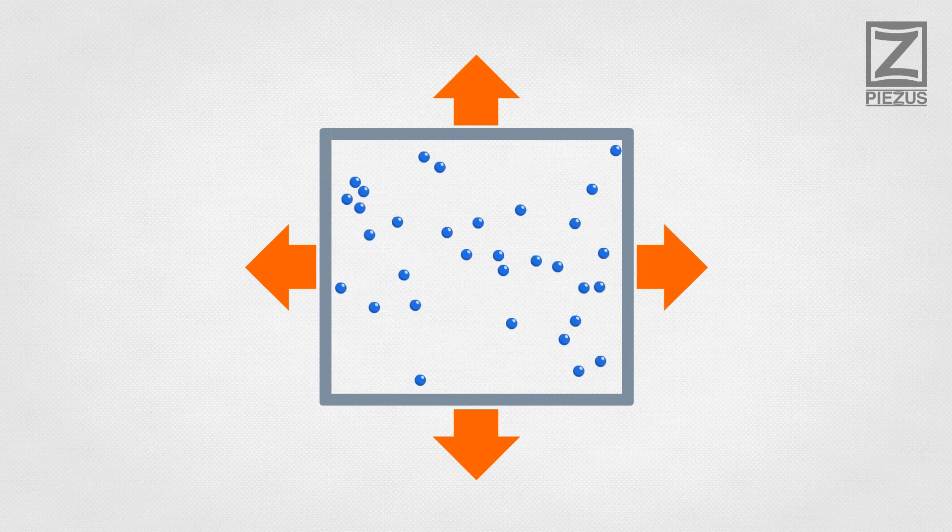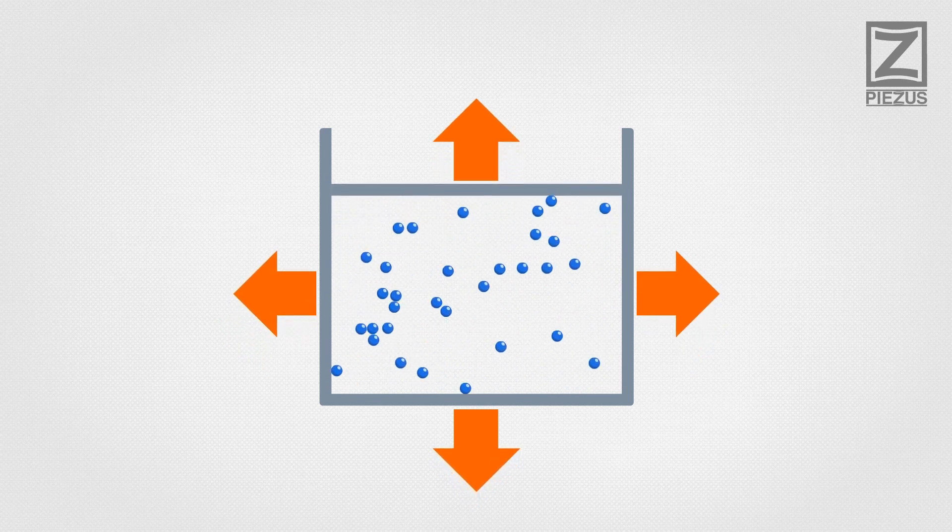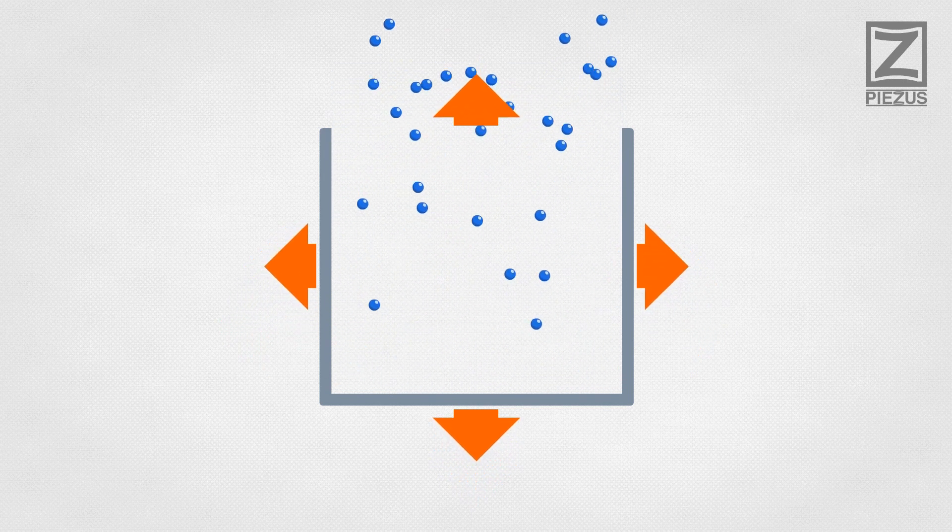When we squeeze a substance, it pushes back, thus the pressure increases. Conversely, stretching would decrease the pressure. Vacuum contains no particles, thus its pressure equals to zero.